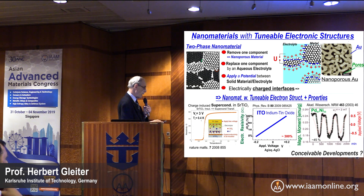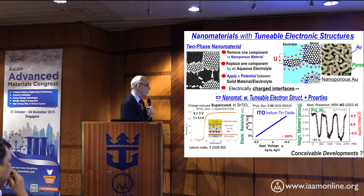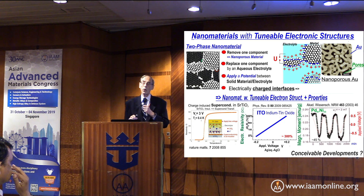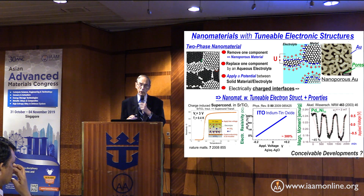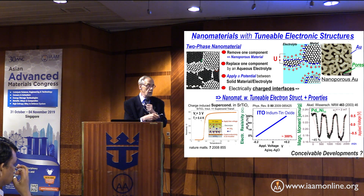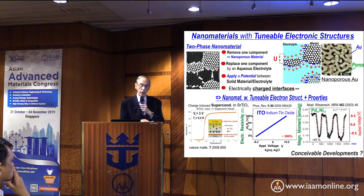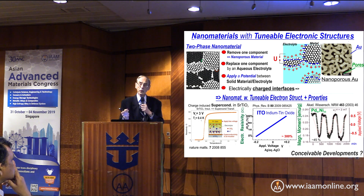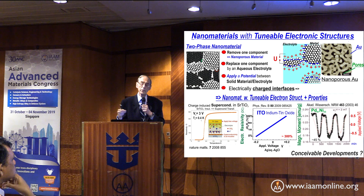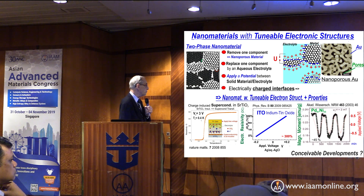Here are three examples. On the lower left side: strontium titanate. In its pure form, strontium titanate is an insulator. When we charge it in the way described, it becomes a superconductor. The critical temperature is about 0.4 K, because we have extracted so many electrons that the electronic structure has changed and made it a superconductor.